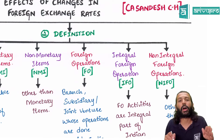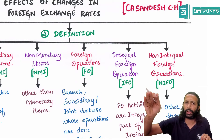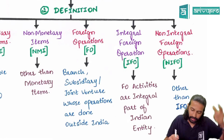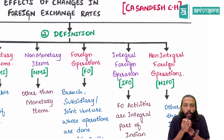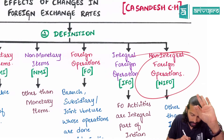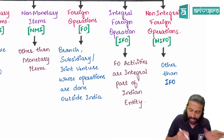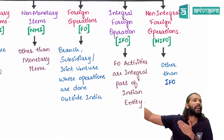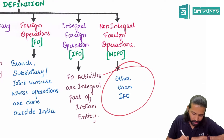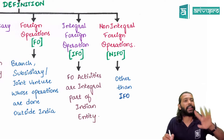Foreign operation means any branch, associate, subsidiary, or joint venture conducting operations in a country other than India. Foreign operations are categorized into two types: Integral Foreign Operation (IFO) and Non-Integral Foreign Operation (NIFO). IFO means the foreign operation's activities are an integral part of the Indian entity — essentially an extension of it, closely connected. NIFO is defined simply as operations other than integral foreign operations.